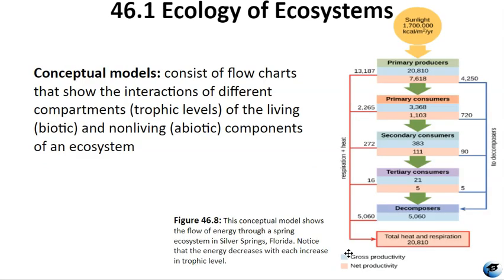Conceptual models consist of flow charts that provide a visual representation of energy and nutrient flow through an ecosystem, similar to the food chain. They are useful for describing ecosystem structure and dynamics and for demonstrating relationships between different organisms in a community. Figure 46.8 shows the flow of energy through an ecosystem and how energy decreases as trophic levels increase. When disturbances occur, these models can show how ecosystems shift away from and eventually return to their equilibrium state, including multiple equilibrium states, allowing for a more accurate representation of the system's complexity.